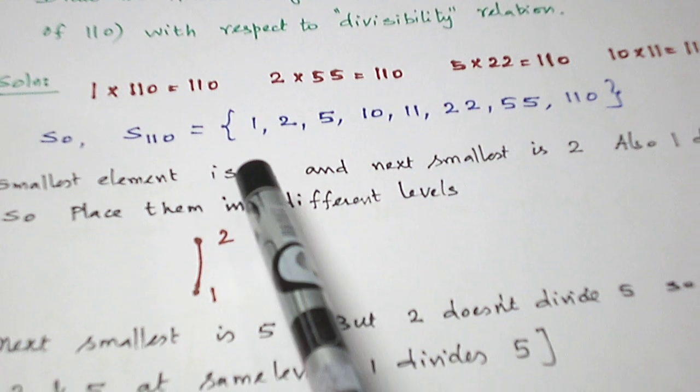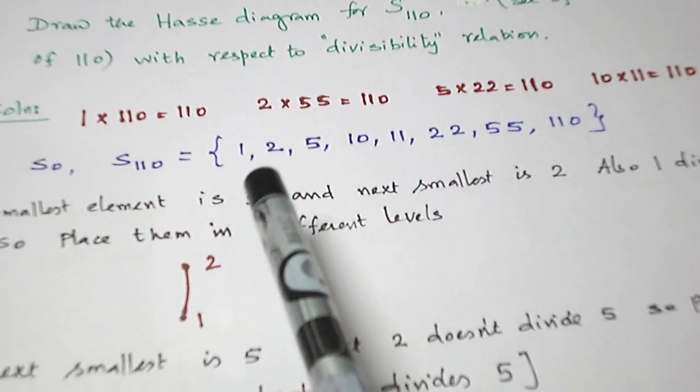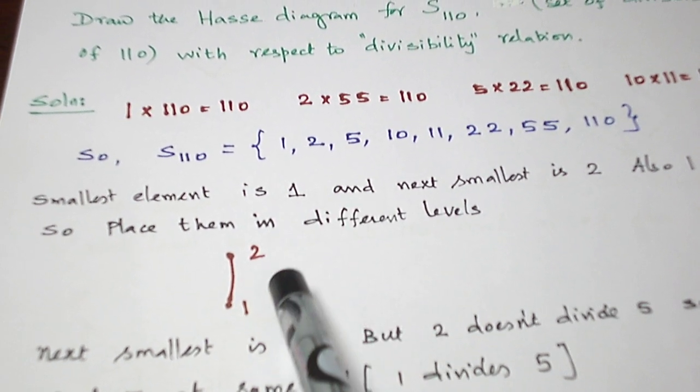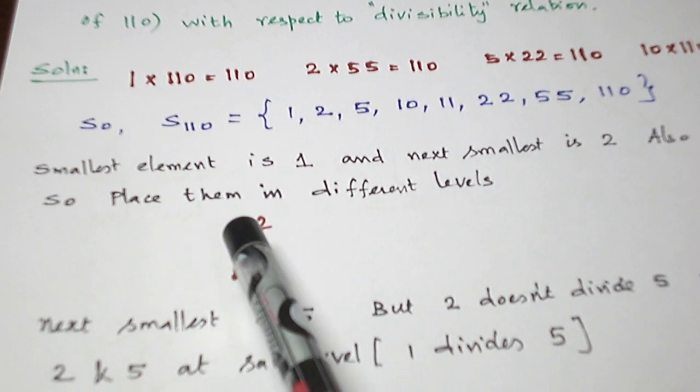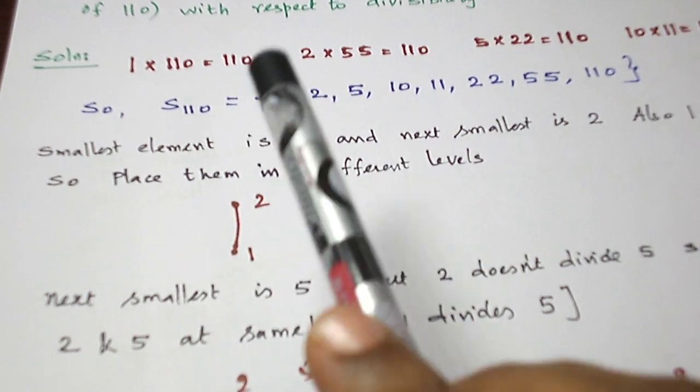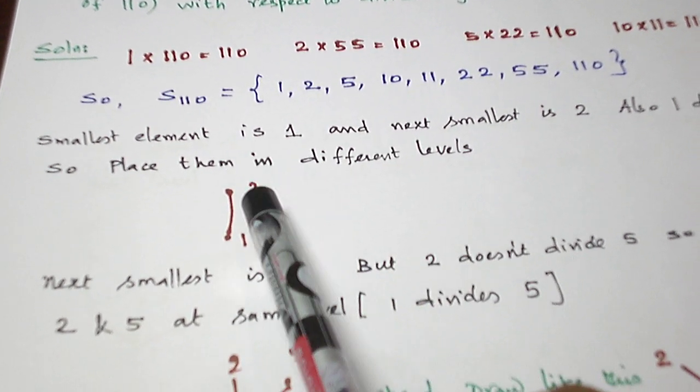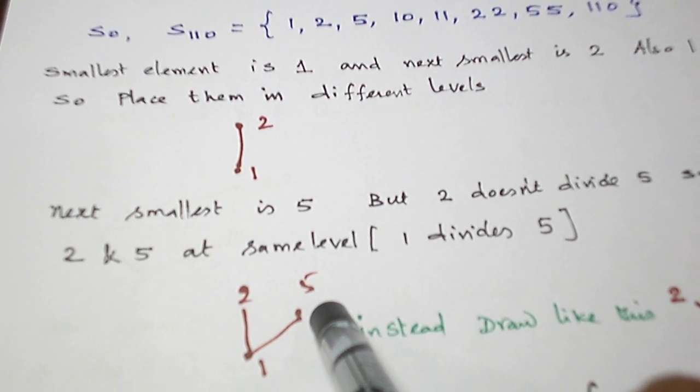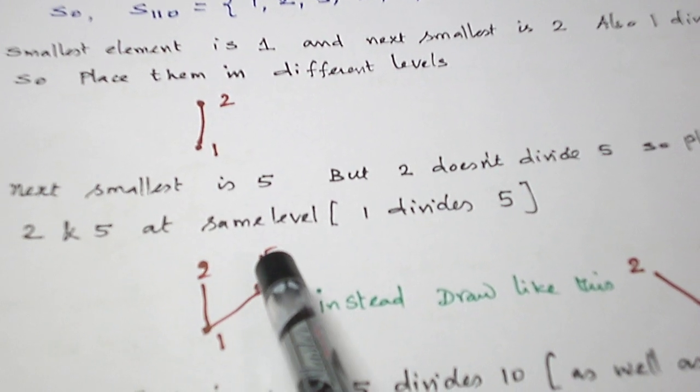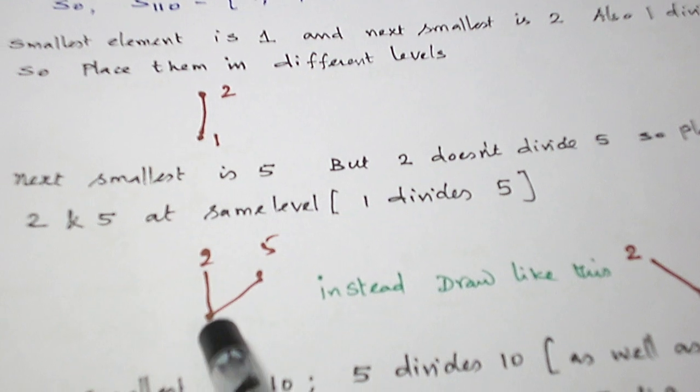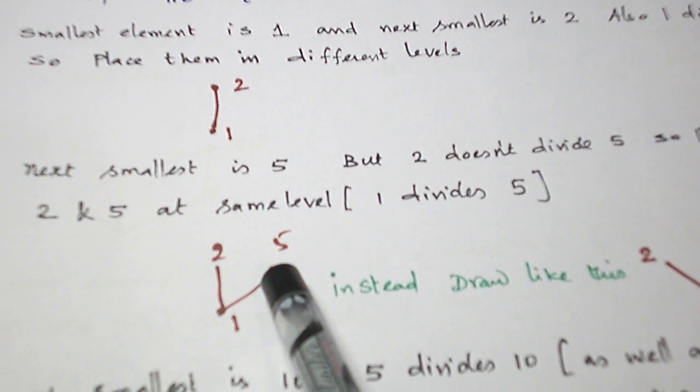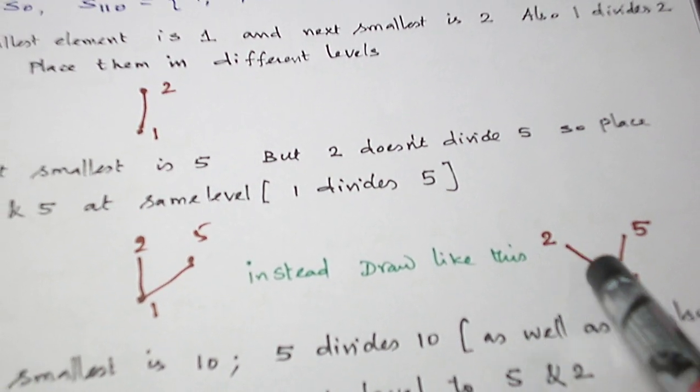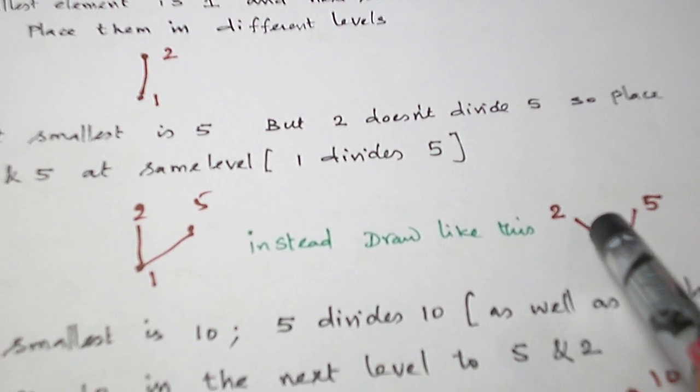The smallest element is 1 and the next smallest is 2. And we know that 1 divides 2, so let us place the 2 elements 1 and 2 in different levels and draw a line between them. Now, the next smallest element is 5. 2 does not divide 5, so we have to place 2 and 5 at the same level. 1 divides 5 also. So instead of drawing like this, let us draw in a V shape so that the Hasse Diagram looks good.